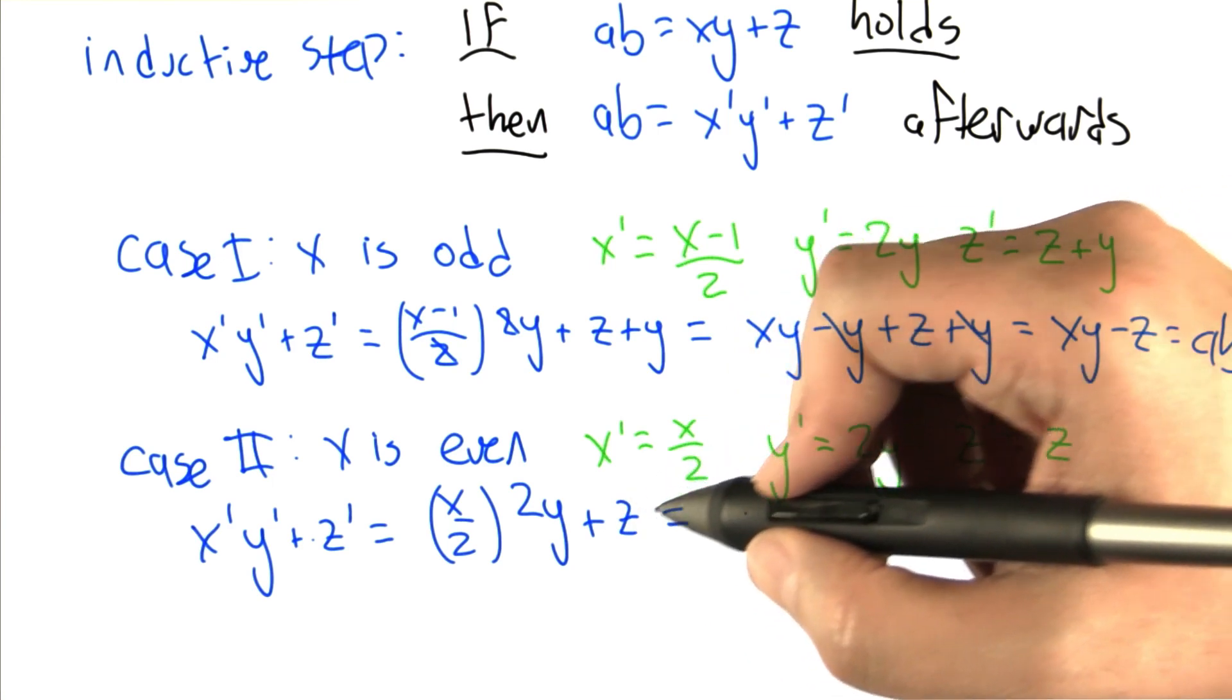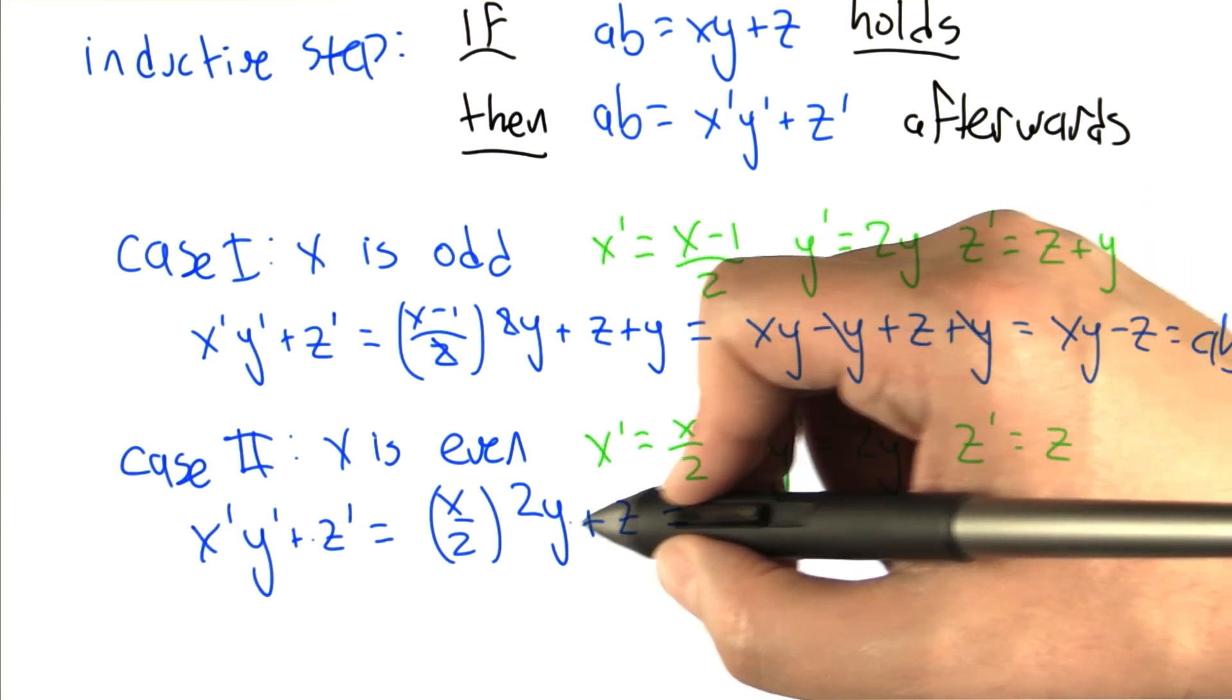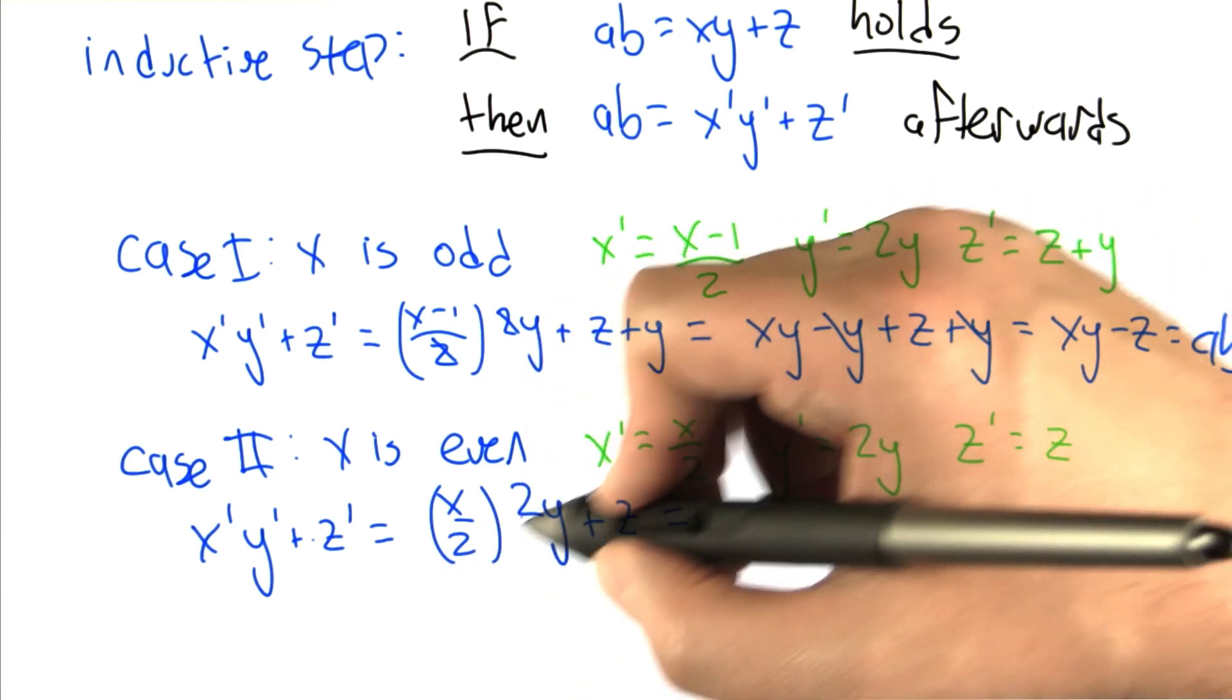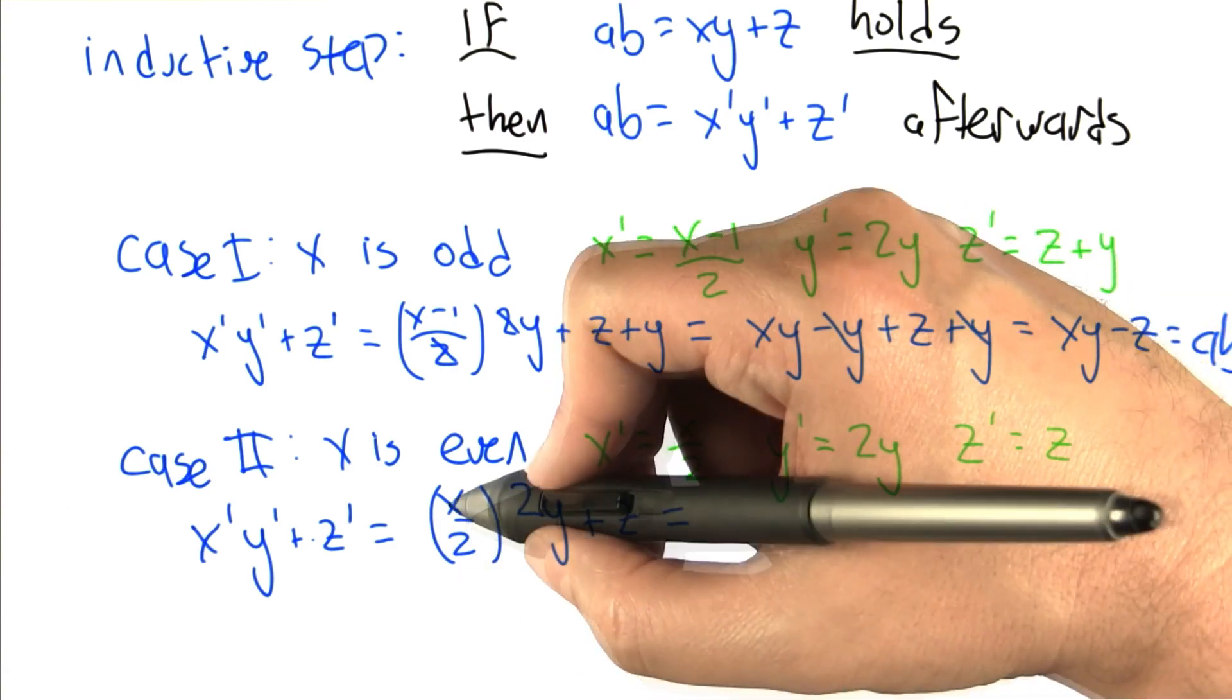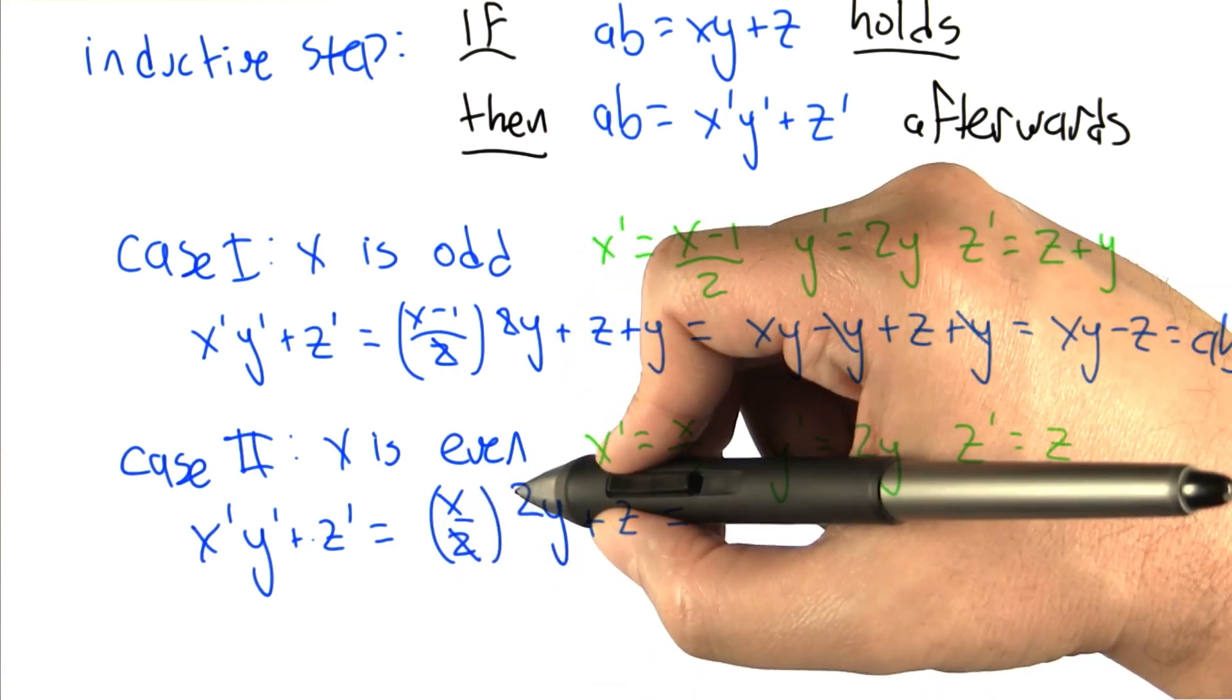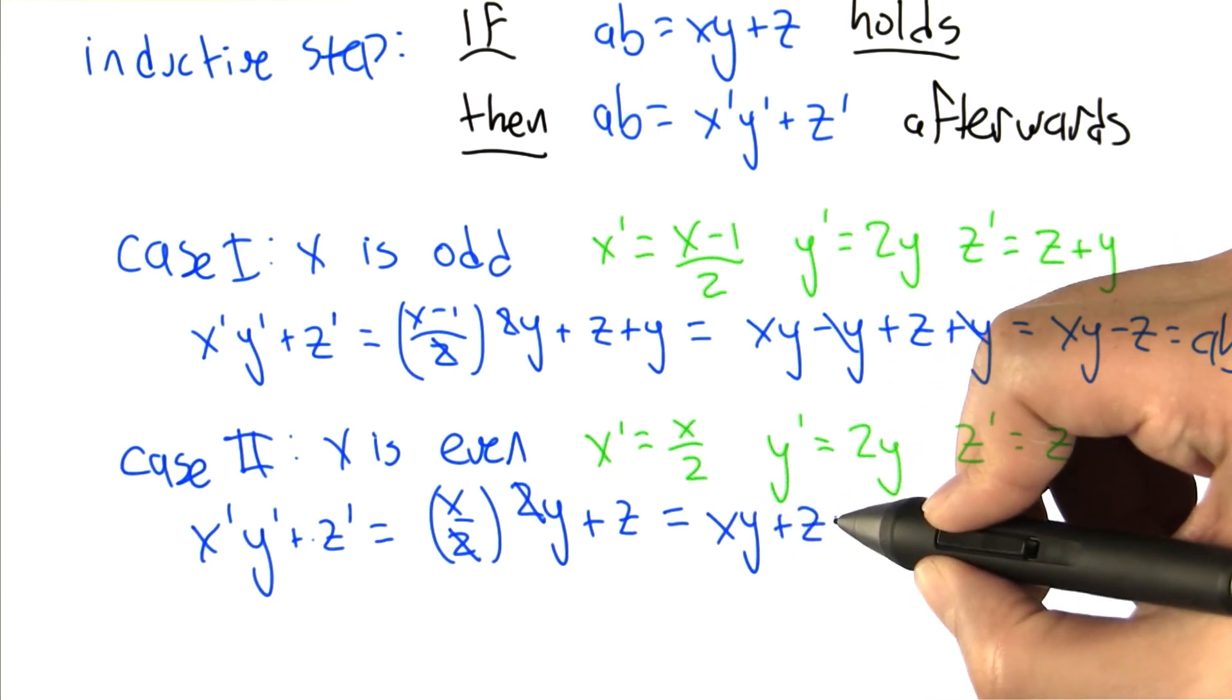Let's look to see what happens in this case. The value of z doesn't change at all. And in some sense, x and y just move a 2 around. So x gets halved and y gets doubled. When we multiply those two together, they cancel. And again, we get xy plus z,